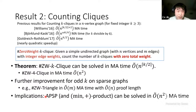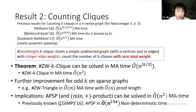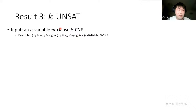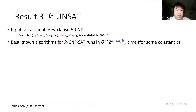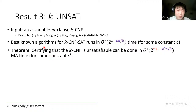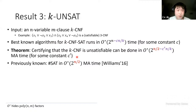Using our zero-weight triangle protocol we give a near-optimal MA protocol for the APSP problem. We can compare with the previous result by Carmosino et al., which gave a non-deterministic algorithm for APSP in n^2.94 time. Our third set of results is about k-CNF: the best known algorithm for k-CNF SAT runs in 2^(n minus a constant times n/k) time. We show certifying that a k-CNF is unsatisfiable can be done in 2^(n/2 minus a constant times n/k) time, slightly improving over the previous best of 2^(n/2).